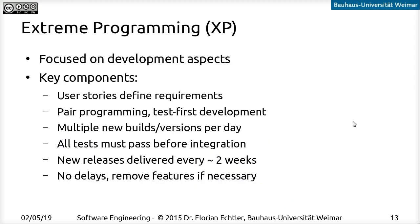Extreme Programming is generally focused on the development aspects, not as much on the management aspects. Key components include user stories as requirements definition — not the traditional user and system requirements documents. We have Pair Programming, test-first development, and multiple new software versions every day. All tests must pass before integrating new code, with a development cycle of roughly two weeks. If we can't make the deadline, we remove features rather than delay the release.